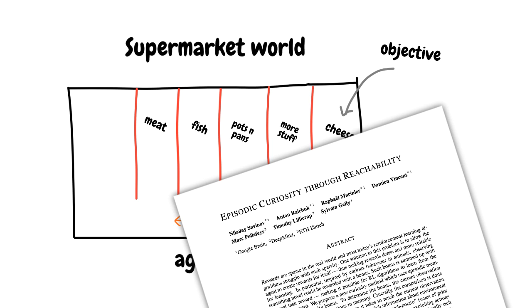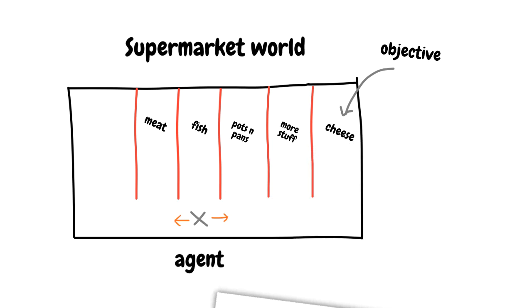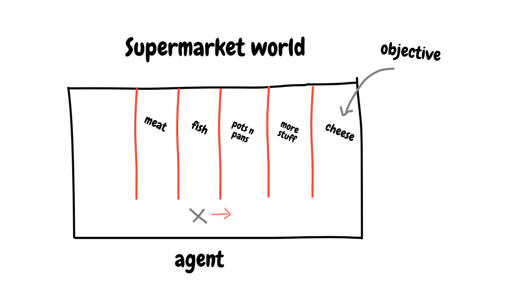So how does this help? When an agent starts at the meat section and sees no cheese, it moves to the fish section. However, it still sees no cheese. At this point, the agent has two options: it can either move back to the meat section, or it can move to the next aisle. This time, the agent would most certainly move to the new aisle.